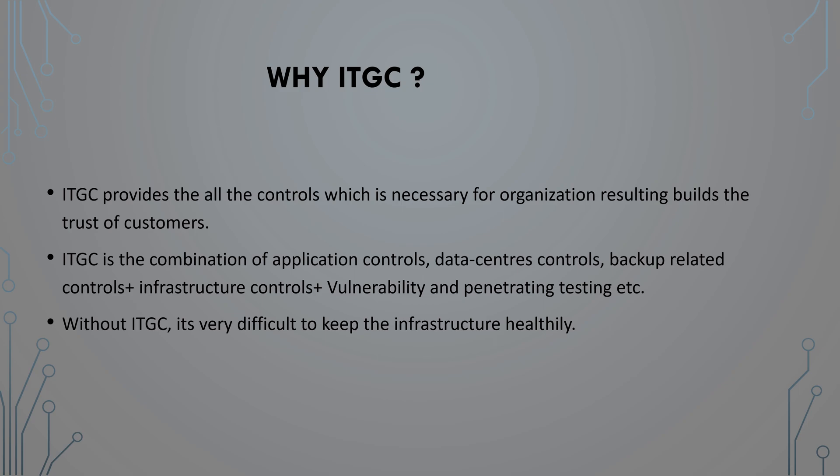Infrastructure controls are also part of ITGC. Infrastructure and data center controls are very similar; however, there is a key difference. Under infrastructure, the primary data center, the disaster recovery site, and the BCP site — all three sites — are included. Data center controls refer to only the primary data center.